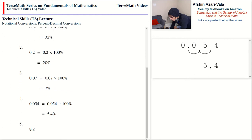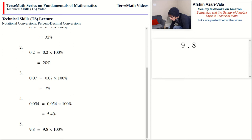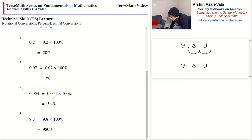Problem five has a whole side that is not zero: 9.8. You should expect that if the whole side is not zero, you'll get 100% or more. Multiplying 9.8 by 100 means moving the decimal point forward over two digits, adding a zero, and we get 980. So 9.8 = 980%.